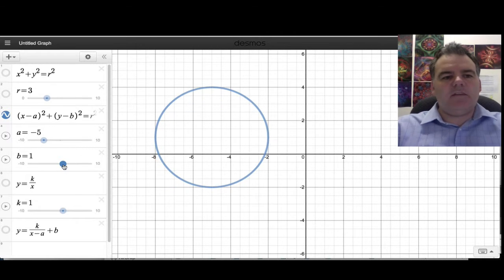So here's (x + 5)² + (y - 1)² = r². So the centre is at (-5, 1). And the radius here is 3.